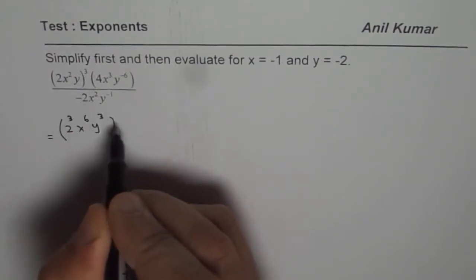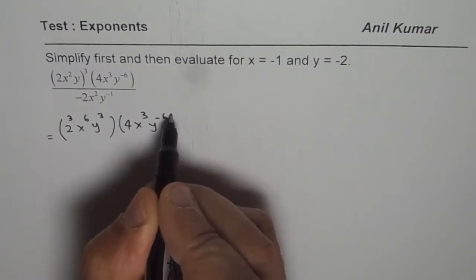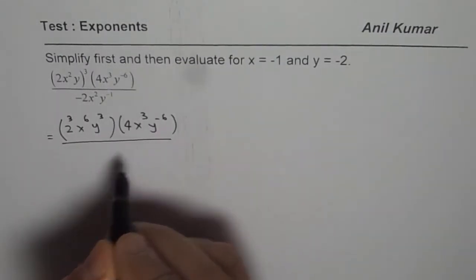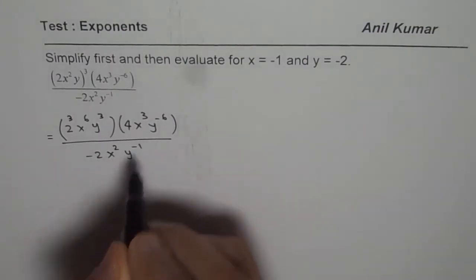This should be multiplied by 4x cube y to the power of minus 6 and divided by minus 2x square y to the power of minus 1.